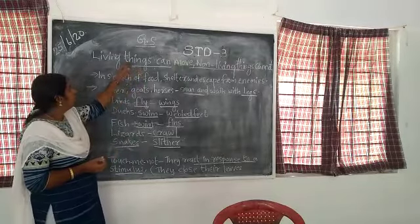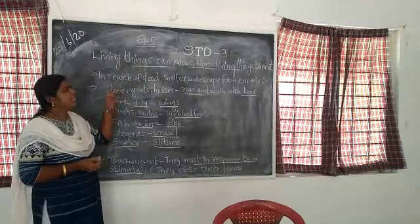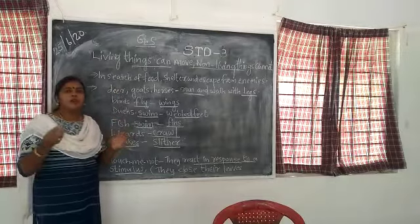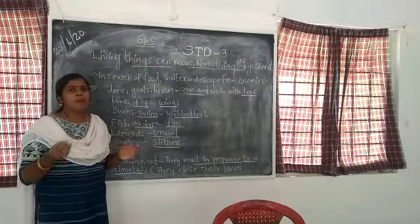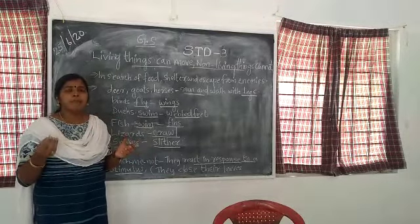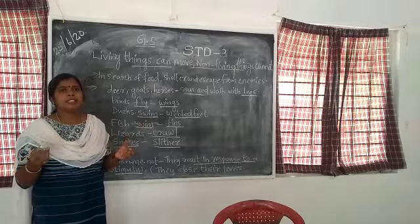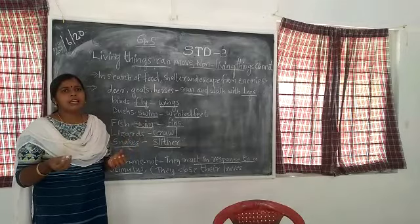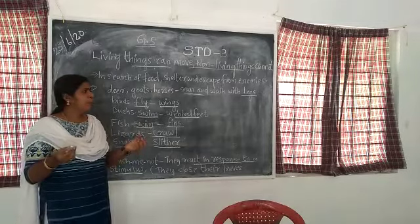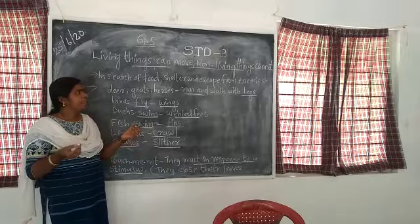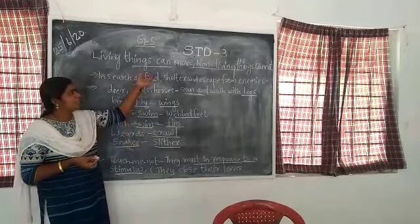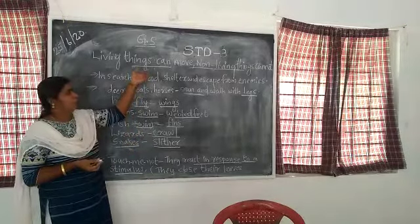Living things can move, non-living things cannot move. Plants also move. Plant parts such as leaves and stem move toward water and sunlight. So plants can also move.